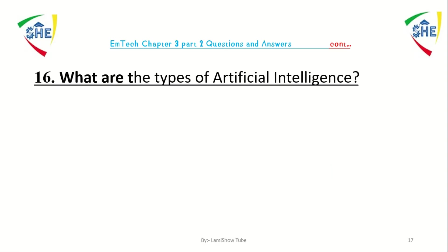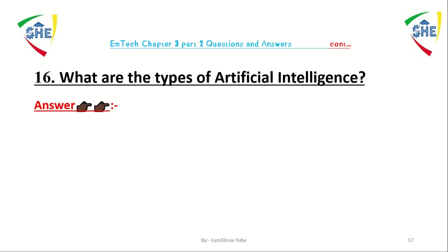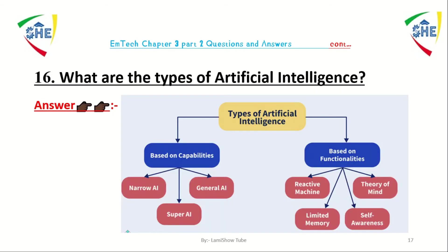Question number 16: what are the types of artificial intelligence? AI can be classified based on capability and functionality. Based on capability: narrow AI, general AI, and super AI. Based on functionality: reactive machine, limited memory, self-awareness, and theory of mind AI.